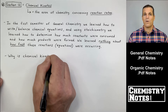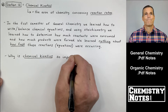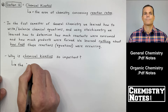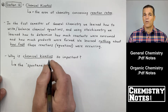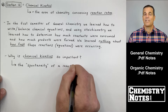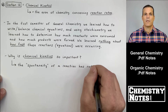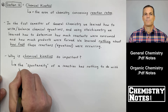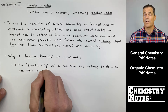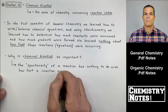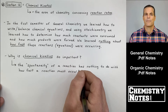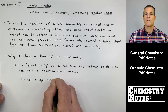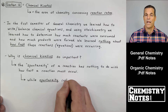It's very important to know how long a reaction is going to take, because if it takes an infinite amount of time it's not going to be very useful to us. Why is chemical kinetics so important? The spontaneity of a reaction — which we'll cover in Section 16 — has nothing to do with how fast the reaction must occur.